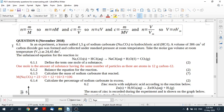Okay let's have a look. In an experiment a learner adds 1.5 grams of sodium carbonate to hydrochloric acid. A volume of 306 cubic centimeters of carbon dioxide gas was formed and collected under standard pressure at room temperature. Take the molar gas volume at room temperature Vm as 24.45 cubic decimeters. So we know here because we're at room temperature the gas is expanded. We're going to use 24.45 in this formula here.